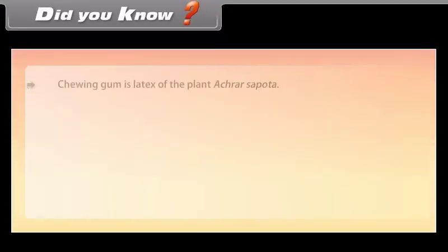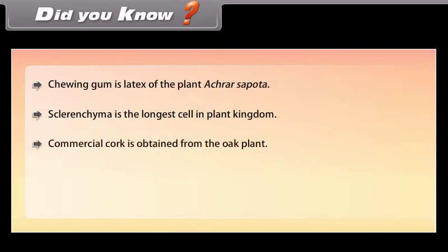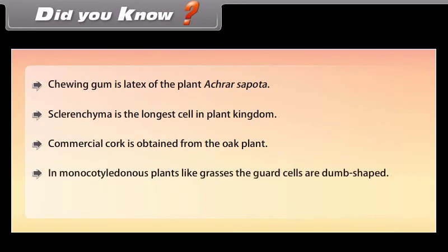Did you know? Chewing gum is the latex of the plant Achras sapota. Sclerenchyma is the longest cell in plant kingdom. Commercial cork is obtained from the oak plant. In monocotyledonous plants like grasses, the guard cells are dumbbell-shaped.